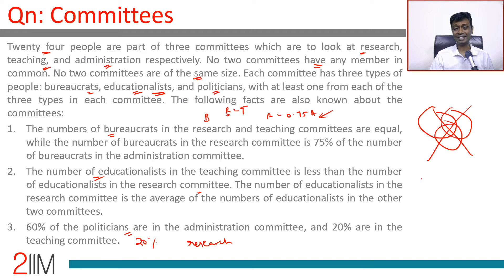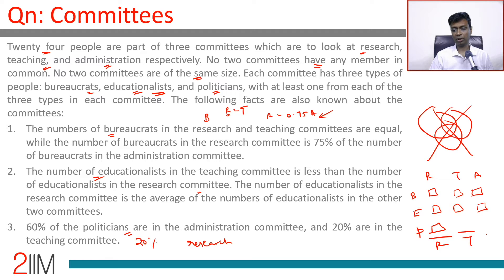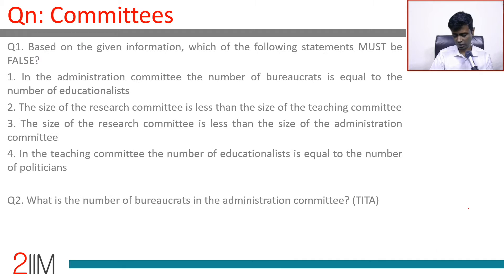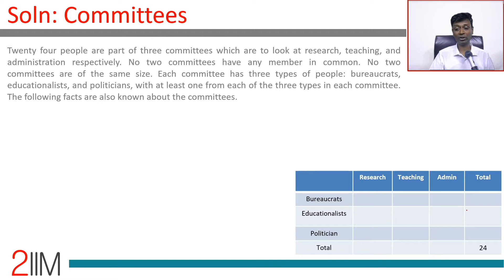How the data is laid out is very important. I think we are going to think about research, teaching, administration as columns and bureaucrats, educationalists, politicians as rows, and look to fill in numbers in each of these categories. These three together will give research totals, these three teaching, admin — and everything put together will add up to 24. Once we know how the data is laid out, these kinds of things are much simpler to solve. There are four questions at the end. Each committee has three types of people with at least one in each — one, one, one is a minimum.